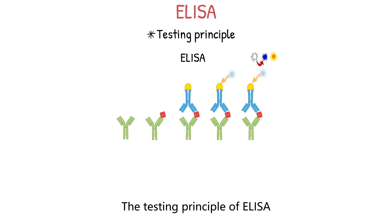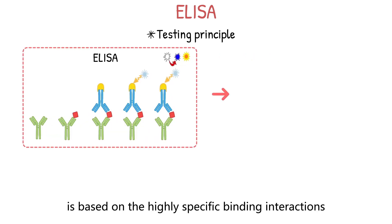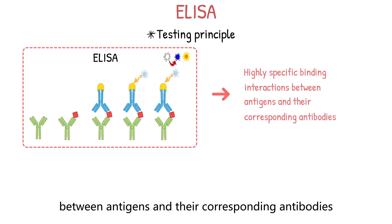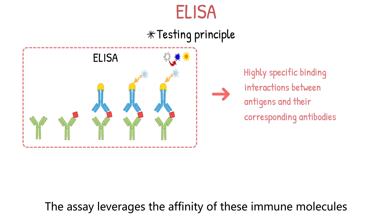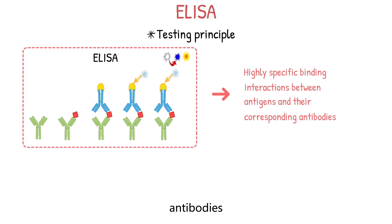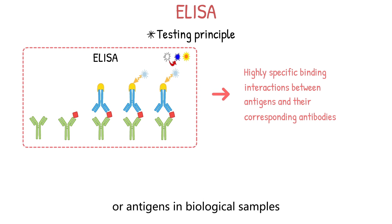The testing principle of ELISA is based on the highly specific binding interactions between antigens and their corresponding antibodies. The assay leverages the affinity of these immune molecules to detect and quantify target proteins, antibodies, or antigens in biological samples.